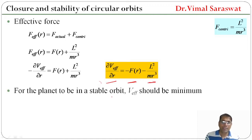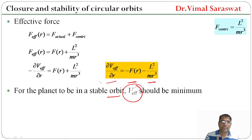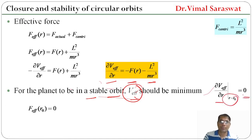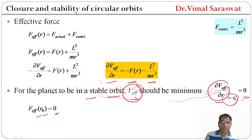For the planet to be in a stable orbit, V_effective should be minimum, because only that orbit will be stable whose potential energy is minimum. For a minimum, the first differential must be zero: ∂V_effective/∂r at r = r₀ equals zero. Since F = −∂V/∂r, if ∂V_effective/∂r is zero, then F_effective at r = r₀ will also be zero.